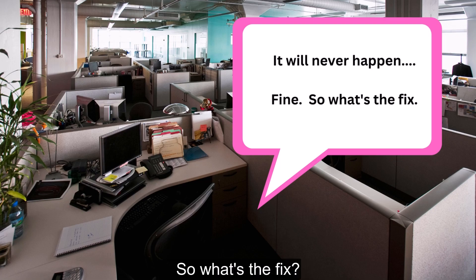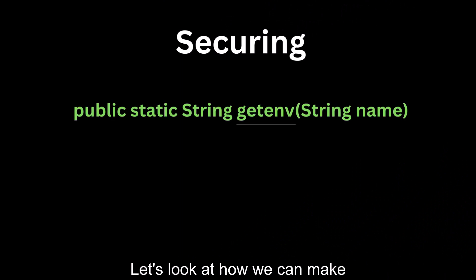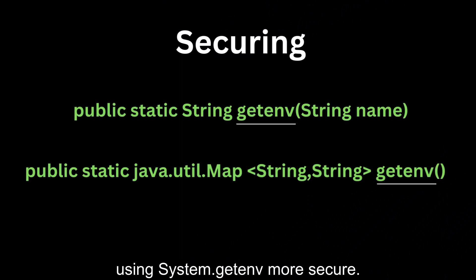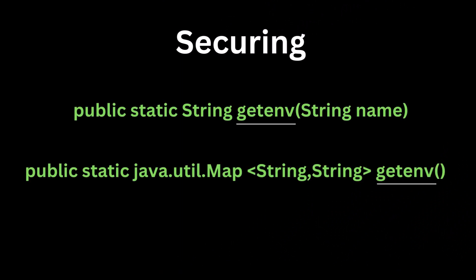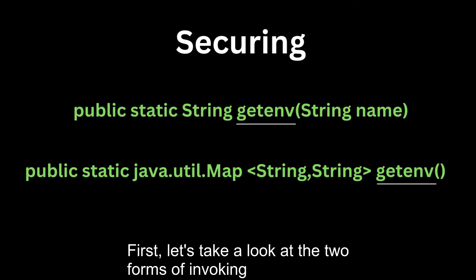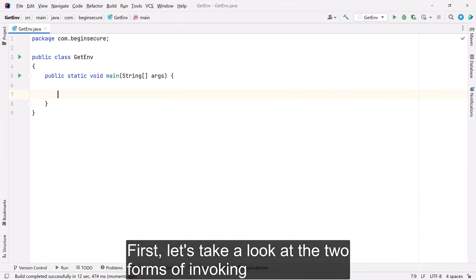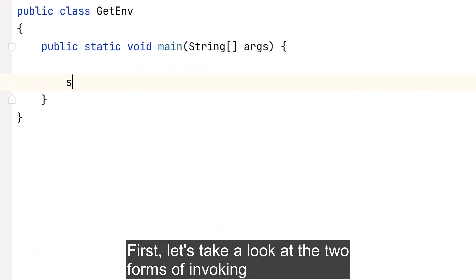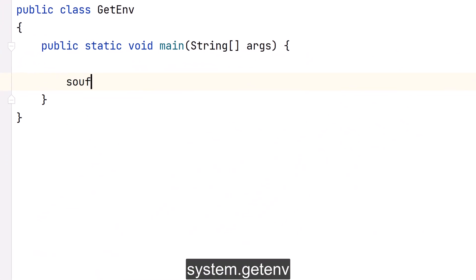So what's the fix? Let's look at how we can make using System.getenv() more secure. First, let's take a look at the two forms of invoking System.getenv().